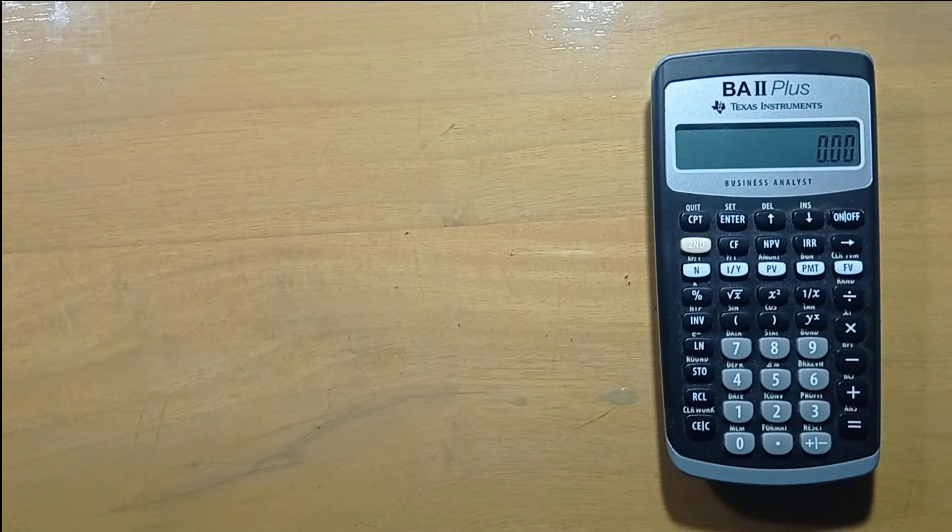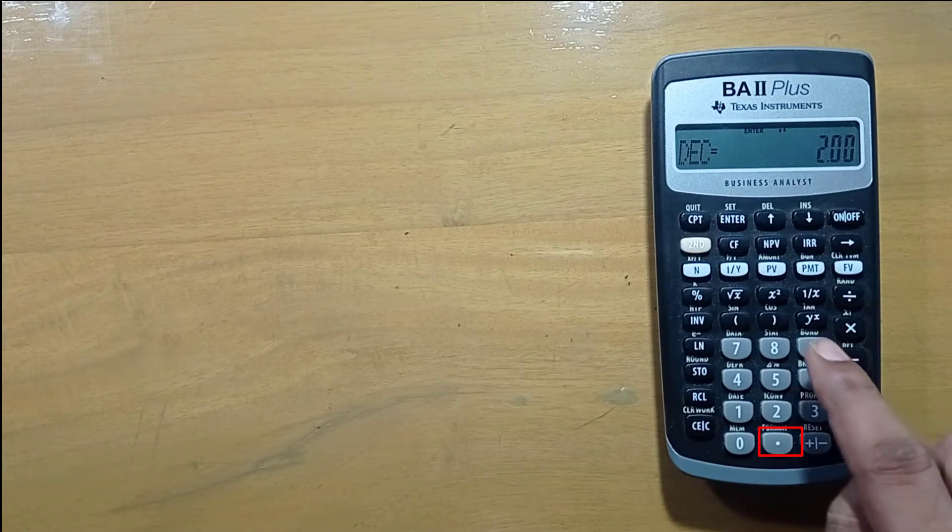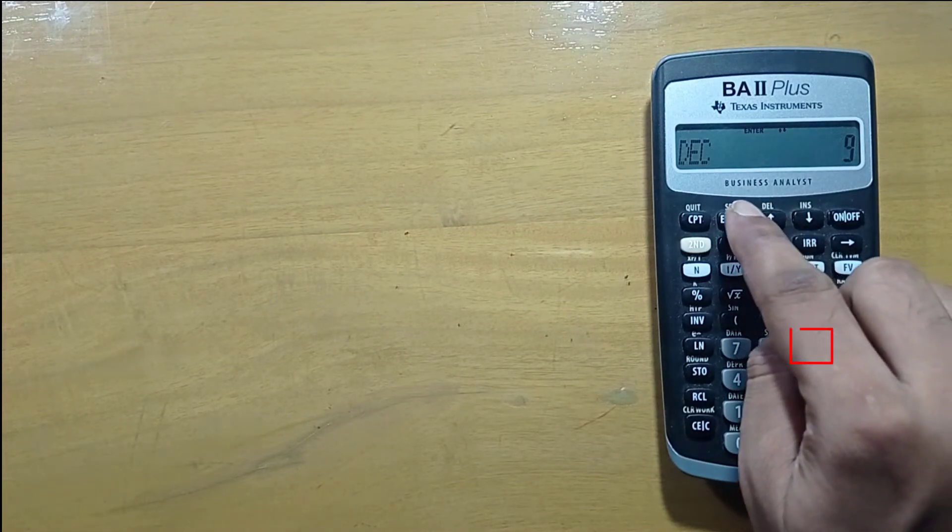To set floating decimal, press second, then format, then press nine and enter.